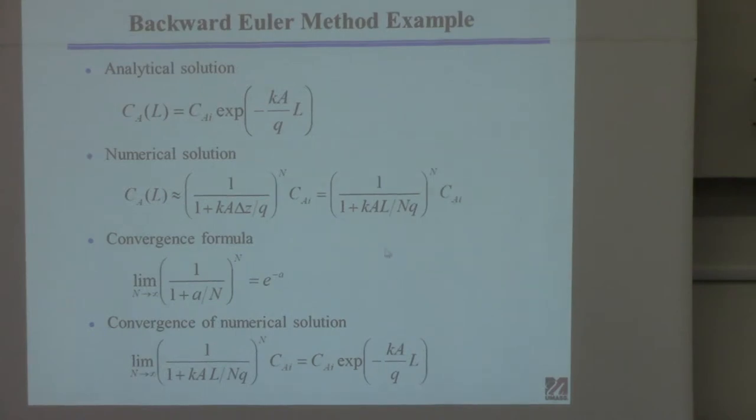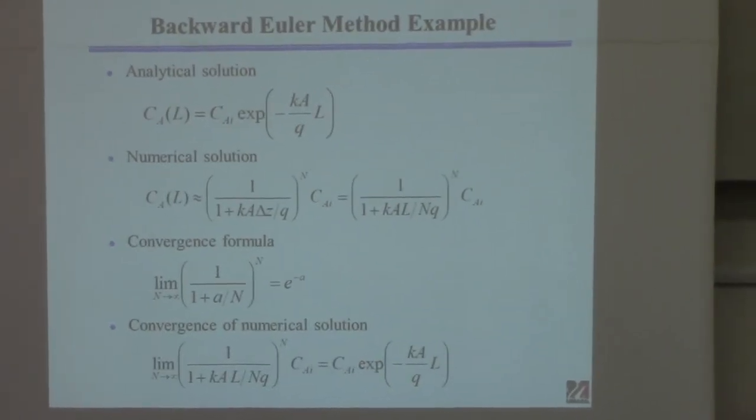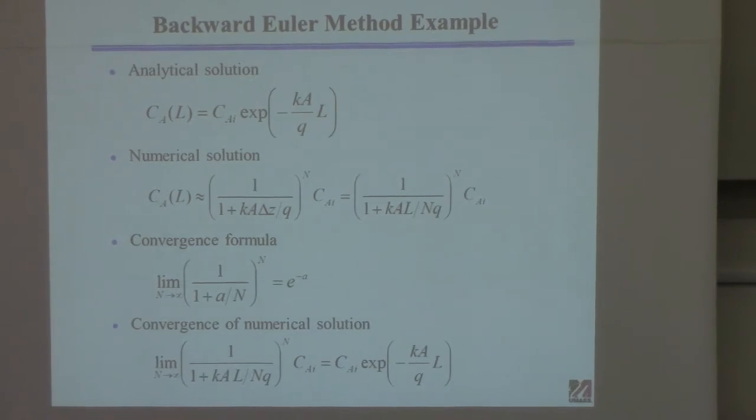So if n gets really large, then I'll get C_a, according to this theorem, exponential of e to the minus a. Well, what's a? a is everything down here except the n, so it's this term there, and that's the same as that solution. You might have to go through that in a little more detail to see the details of this, okay?